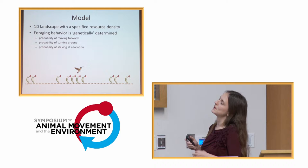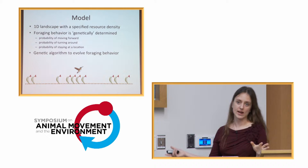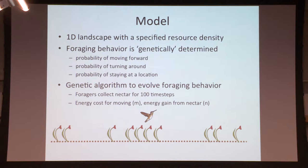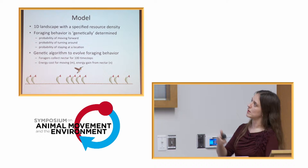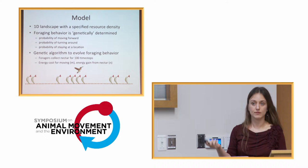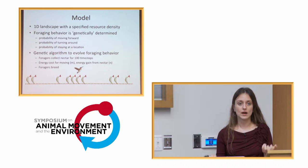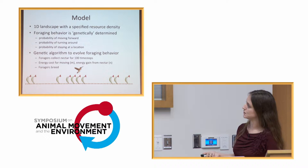Once we have these foraging rules, assigned randomly at the beginning of the simulation, we use a genetic algorithm to evolve the foraging behavior — evolving the probabilities of moving in the same direction, turning around, or staying put. We allow foragers to collect nectar for a given number of time steps, we use 100. We assume there's some energy cost for motion. All energy costs are relative to the cost of just staying put — there's a cost of staying put, but there may be a bigger cost to moving. There's also an energy gain from flowers. We then take the most successful foragers, allow them to breed with some small amount of mutation, which allows the system to find an optimal solution.